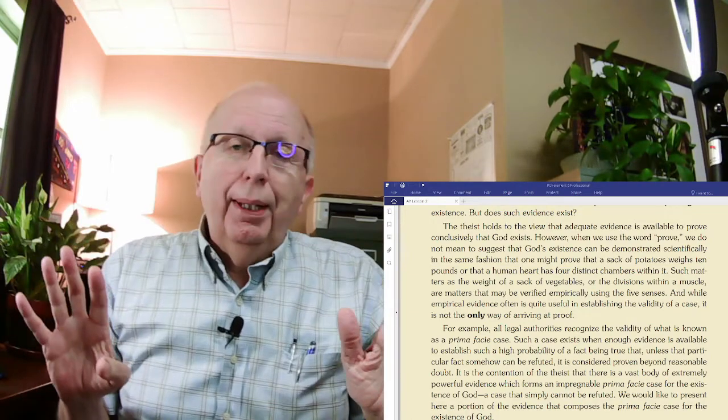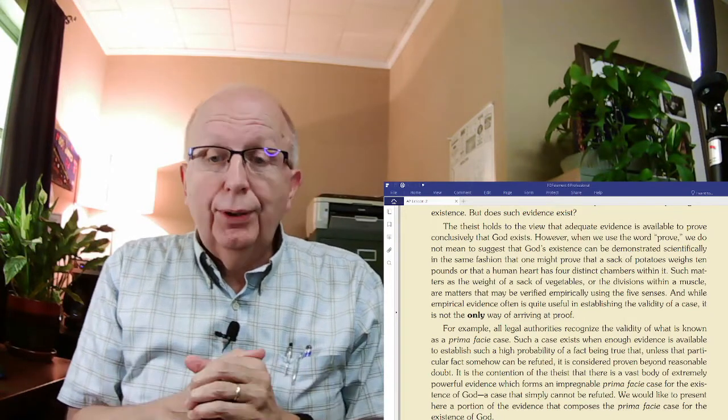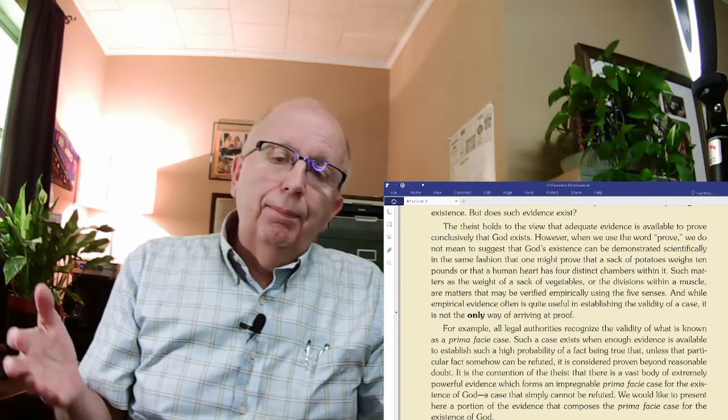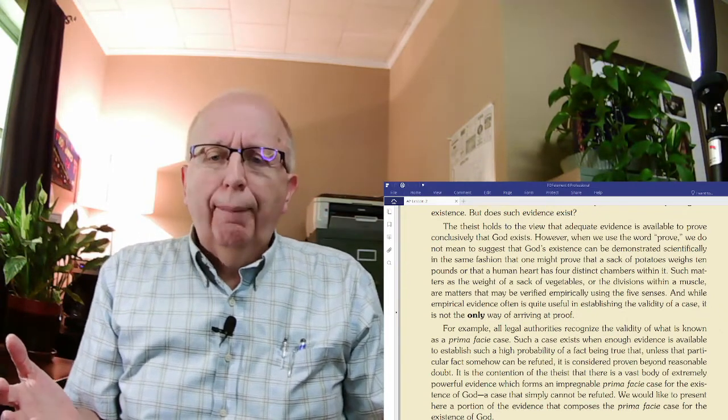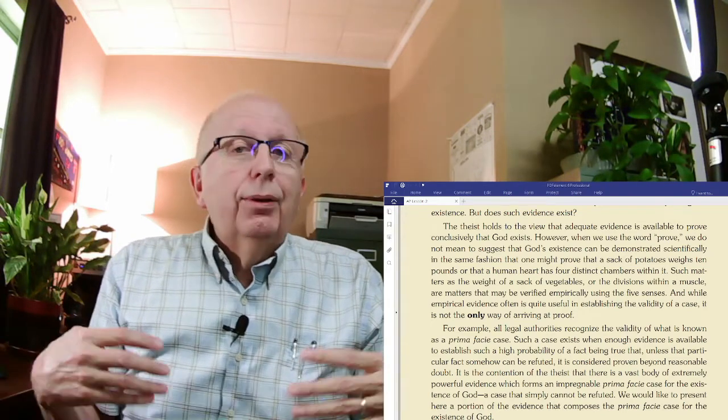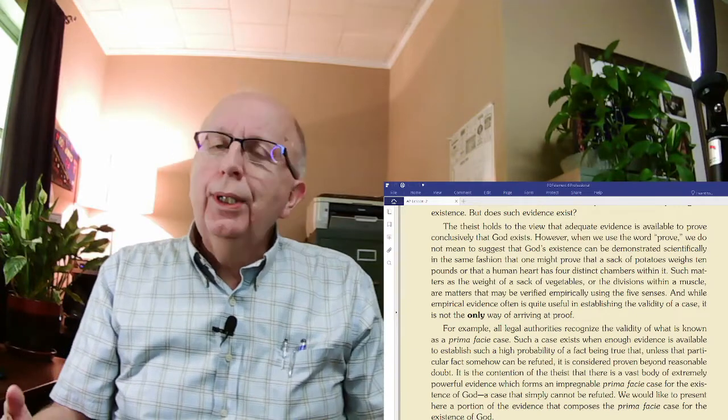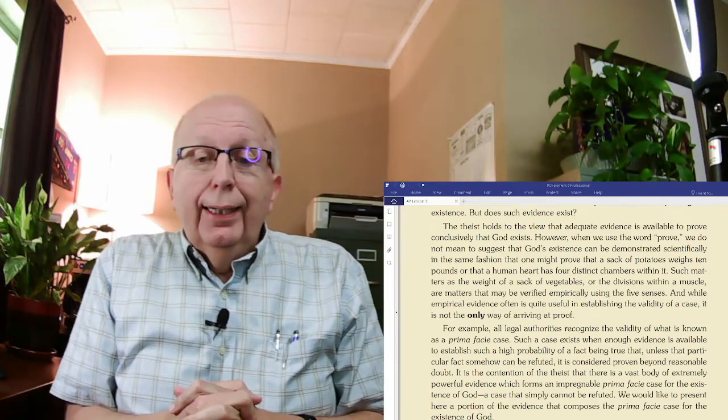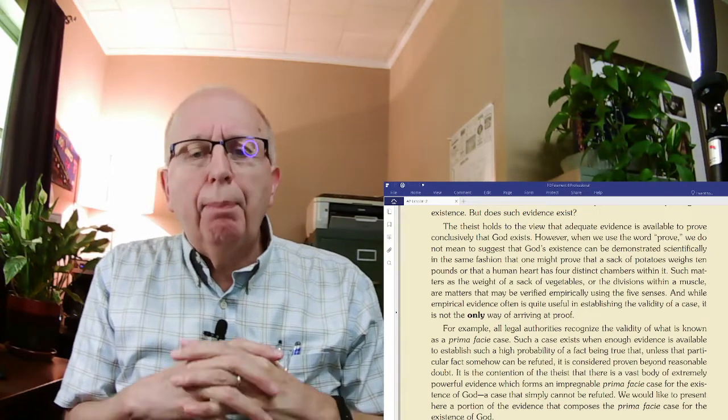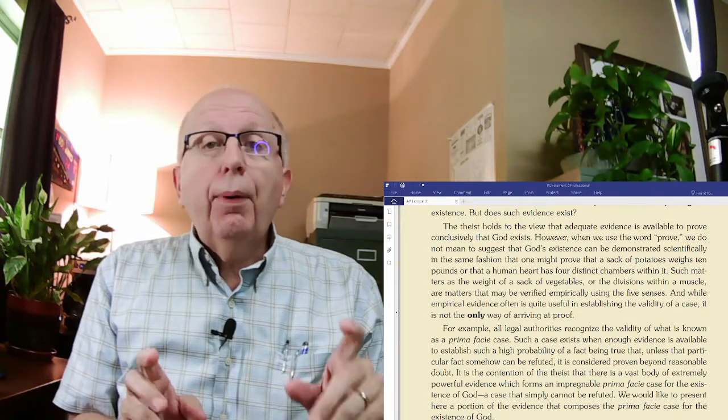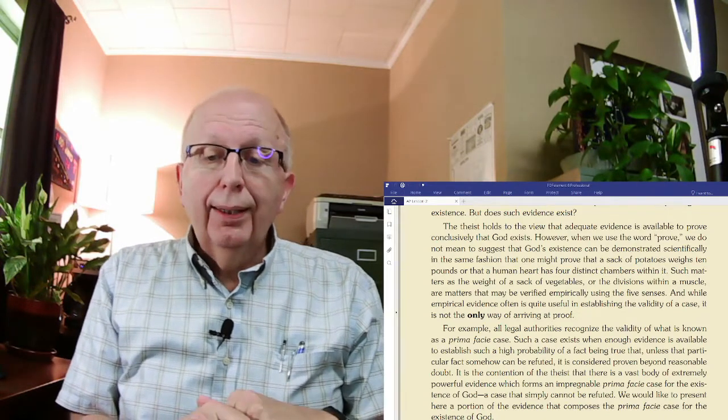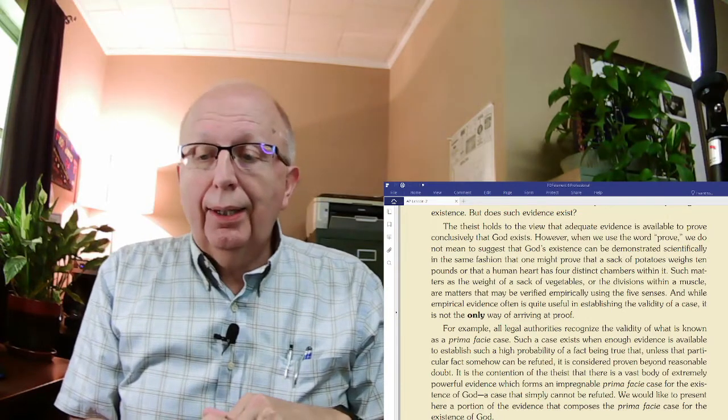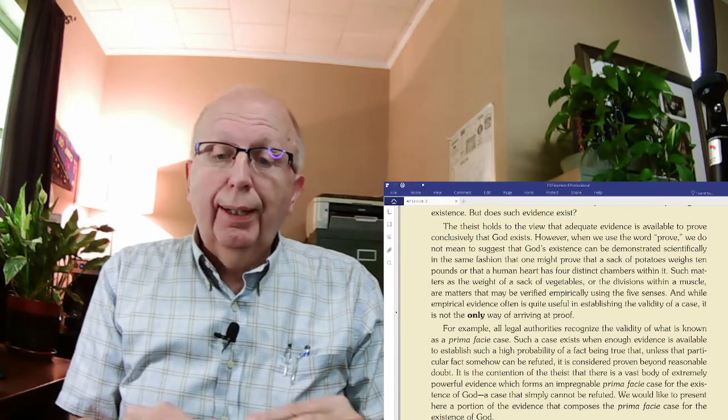Now, here's an example. For example, all legal authorities recognize the validity of what is known as prima facie case. Such a case exists when enough evidence is available to establish such a high probability of a fact being true, that unless that particular fact somehow can be refuted, it is considered proven beyond reasonable doubt. Now, let me pause here a minute. This is why I think it's so valuable for you to have your own copy of the lessons. That's kind of a long sentence. And I think it helps to go back and reread that. Prima facie. That's not a word that we use that often. But it has a very technical meaning.